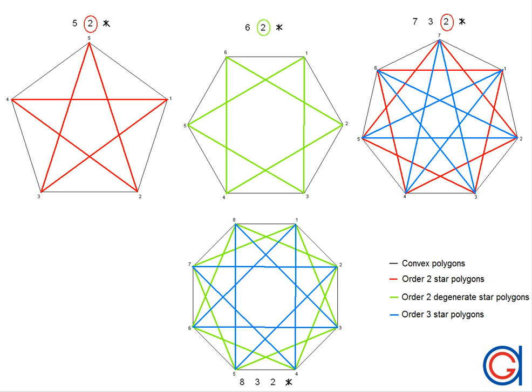And finally, in the octagon or the 8-sided polygon, 8 divided by 2 equals 4. So in this case there are also 2 possibilities: order 2 and order 3. In the case of order 2, it is a divisor of 8, so it's a degenerate star polygon. And in order 3, it is not a divisor of 8, so it's a regular star polygon.